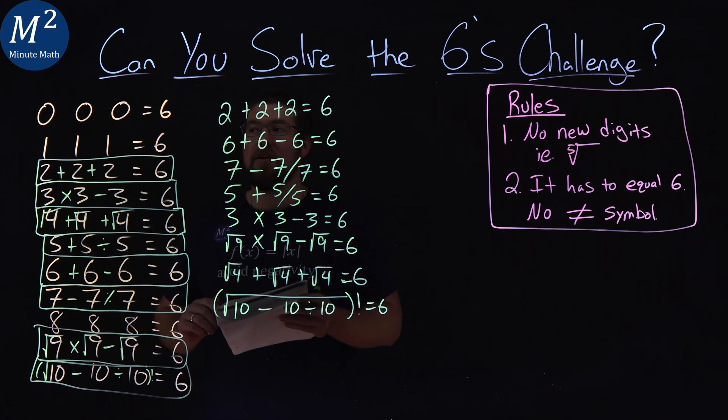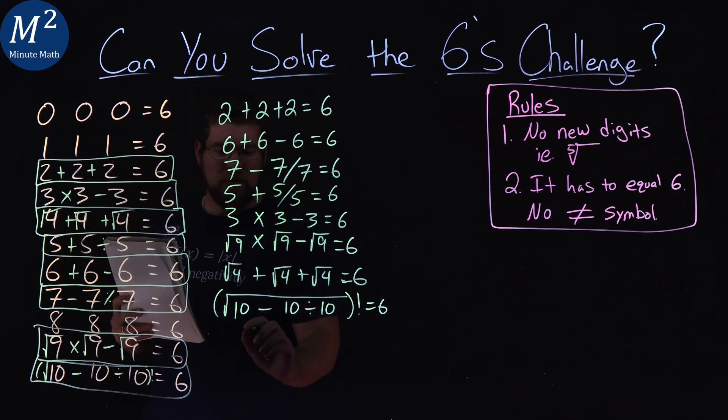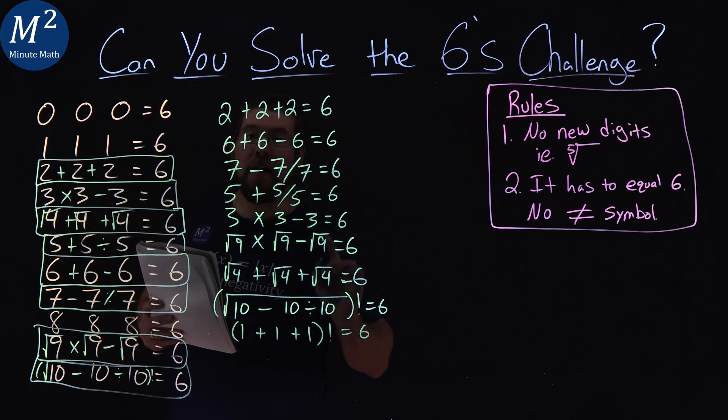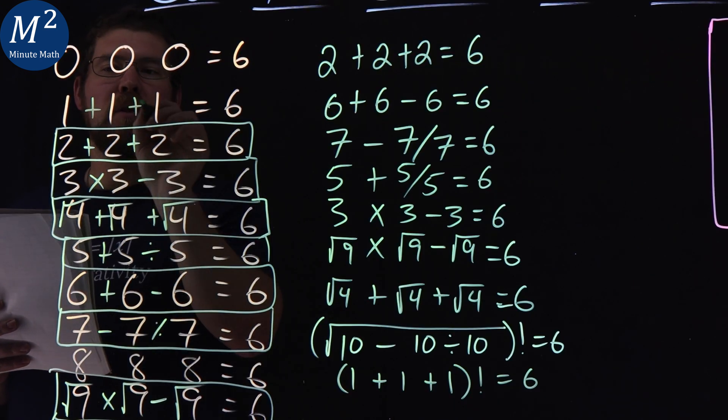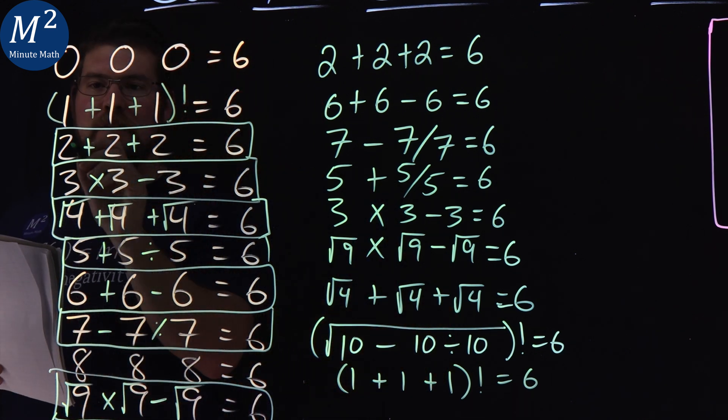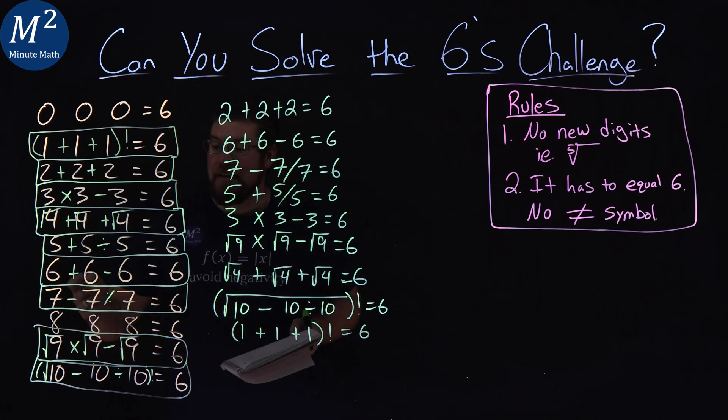Moving on. Next, I actually did the ones. Ones with this here, getting the three factorial. I saw that one plus one plus one is three, factorial of that, and we get the six. Plus, plus, factorial of that, and we get the six. We've completed the ones.